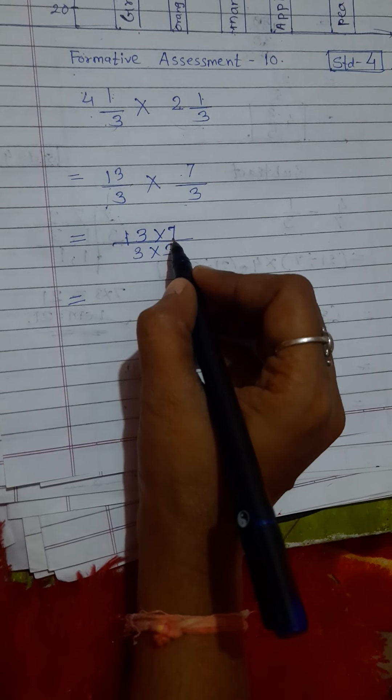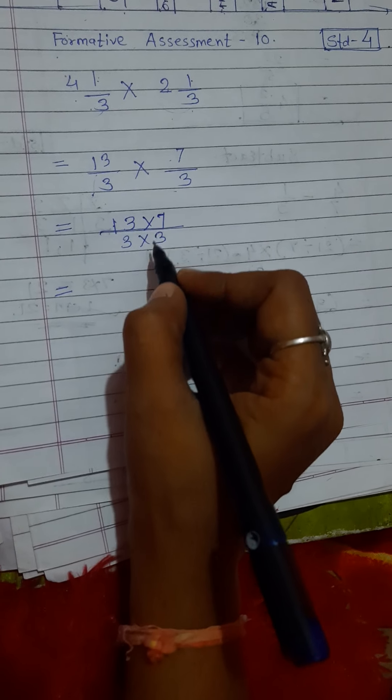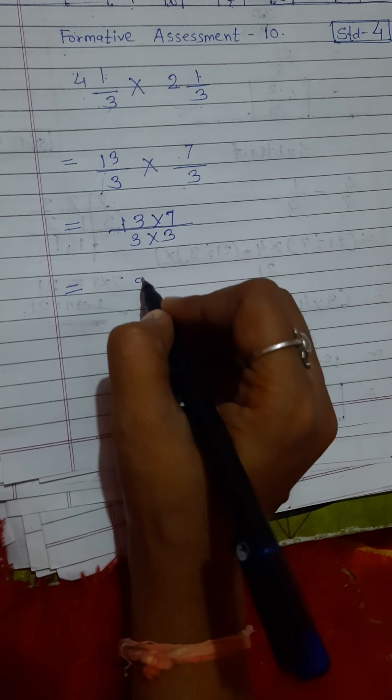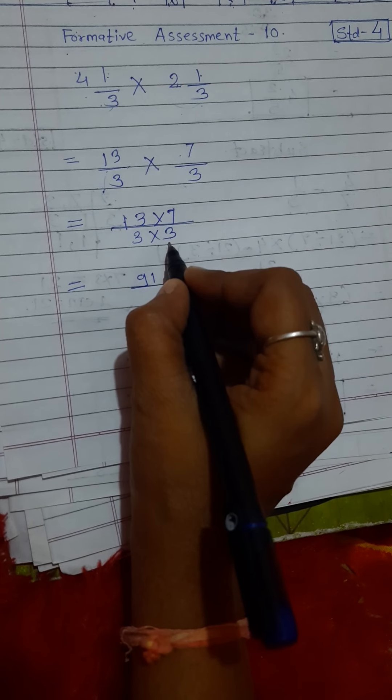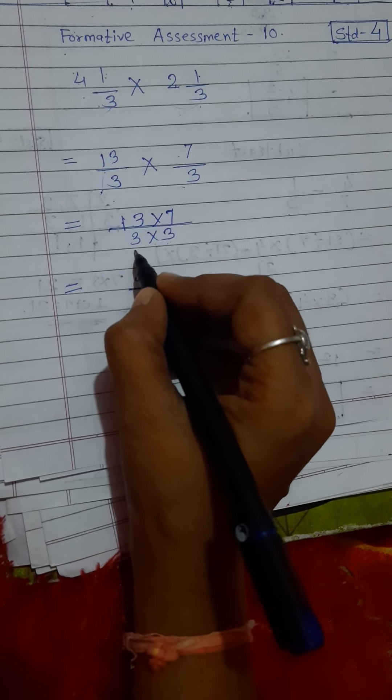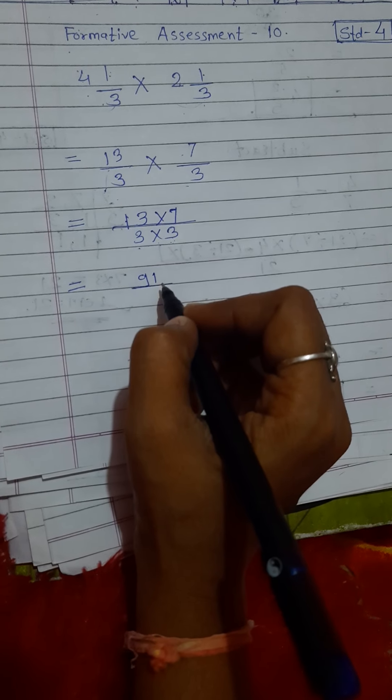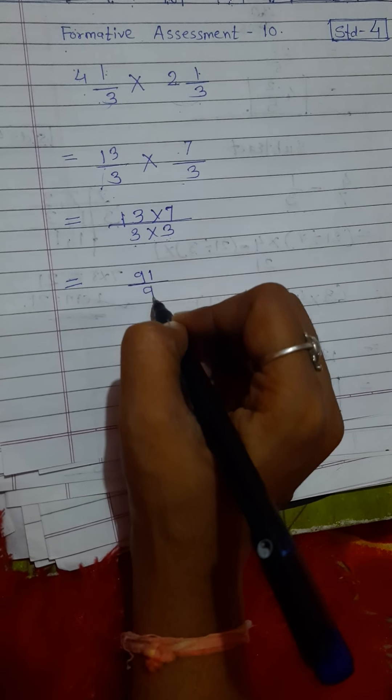13 sevens are? Very good, 91. So write down here: 91 divided by. Now just multiply the denominator: 3 × 3. 3 threes are? Very good, 9. 9.